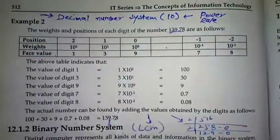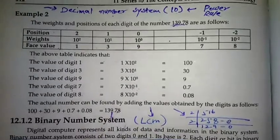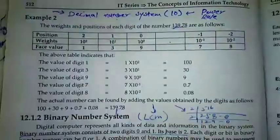we are on our topic decimal number system. In the decimal number system, we have actually base 10 and we have to use power rule.